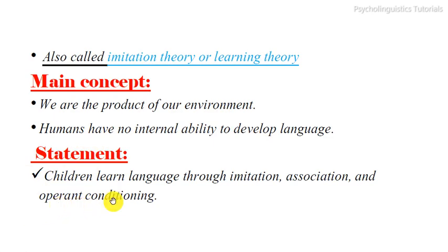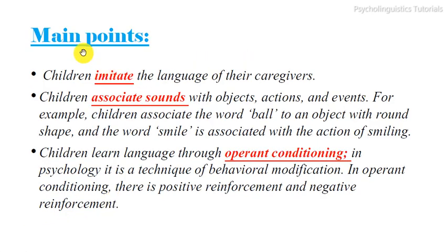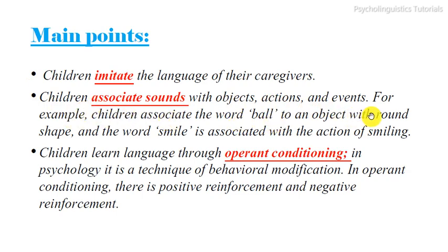The main statement of the theory is that children learn language through imitation, association, and operant conditioning. Children imitate the language of their caregivers. Children associate sounds with objects, actions, and events — for example, children associate the word 'ball' with an object of round shape, and the word 'smile' is associated with the action of smiling.